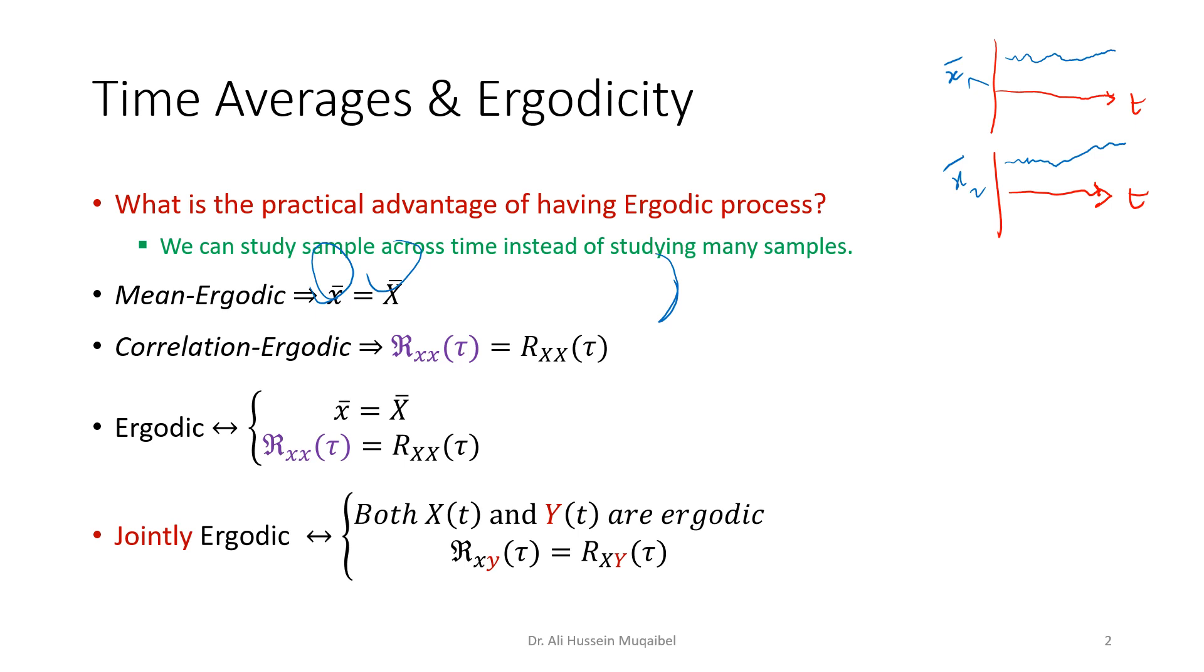We can also go for joint ergodic random processes. If they are jointly ergodic, it means that they are individually ergodic and their cross-correlation in time is just like their cross-correlation for all the random processes. To sum up, an ergodic process allows you to study one sample instead of studying all the samples.